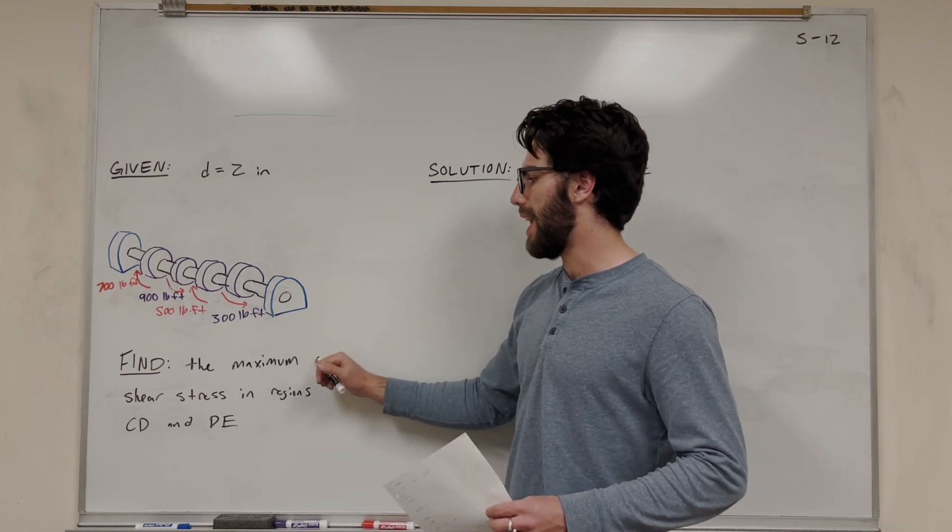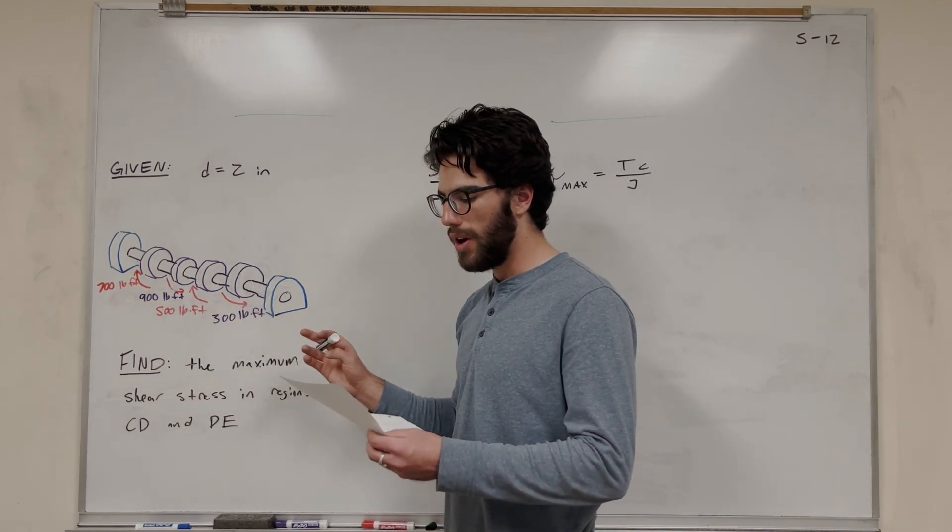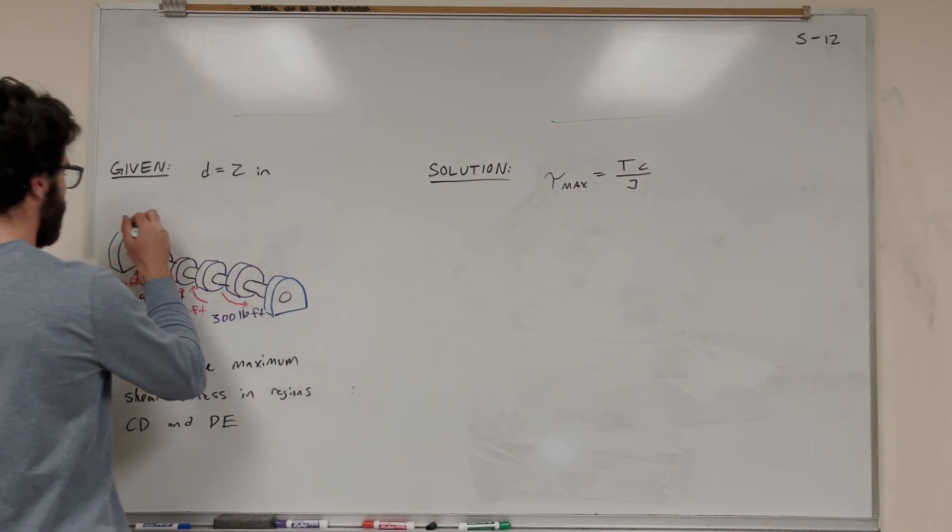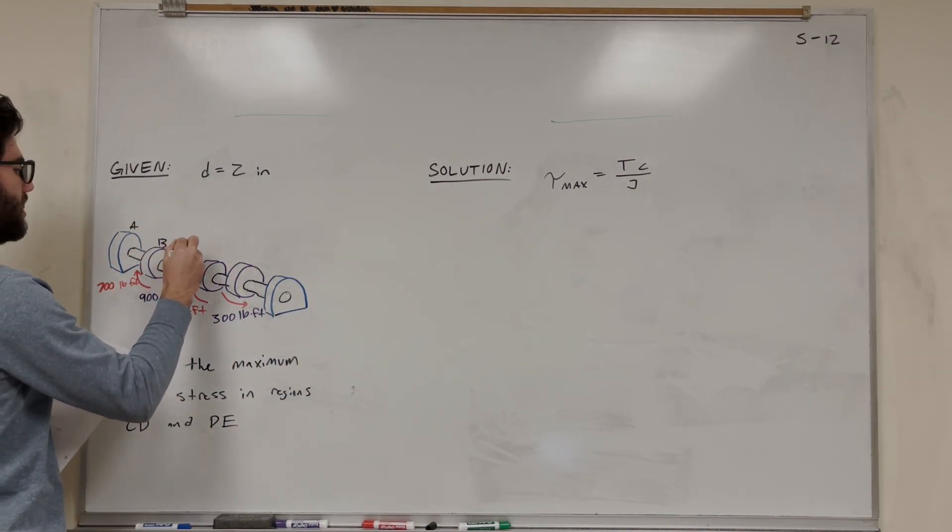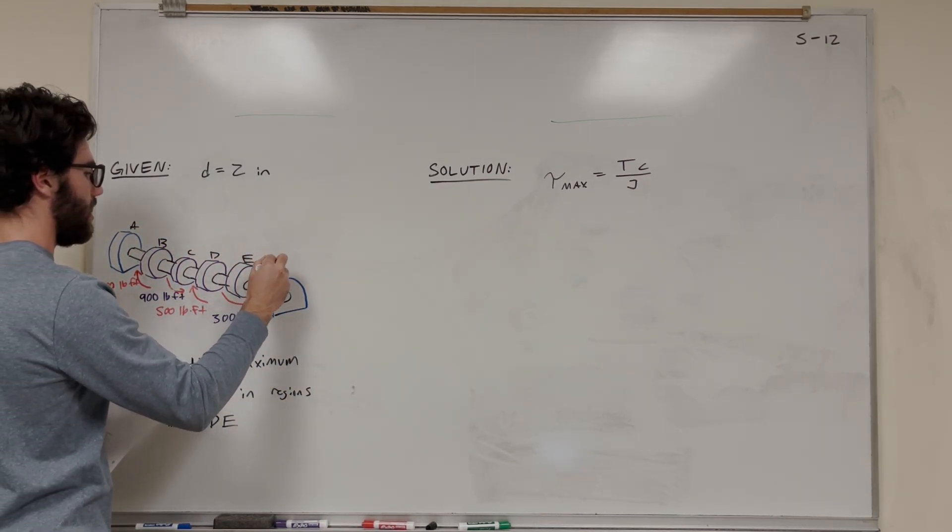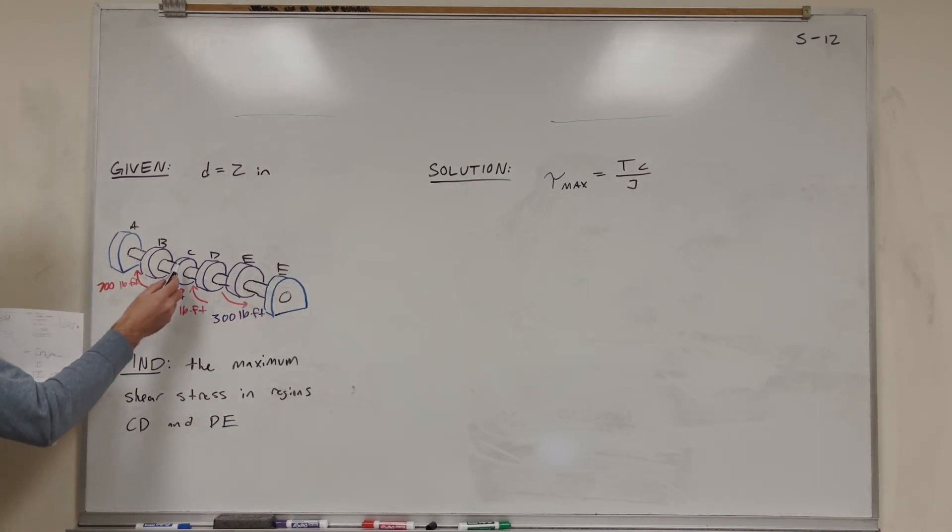So we want to find the maximum shear stress in region CB. Oh, I totally forgot to label it. It's just A, B, C, D, E, F. So CB is here to here, and DE is here to here.